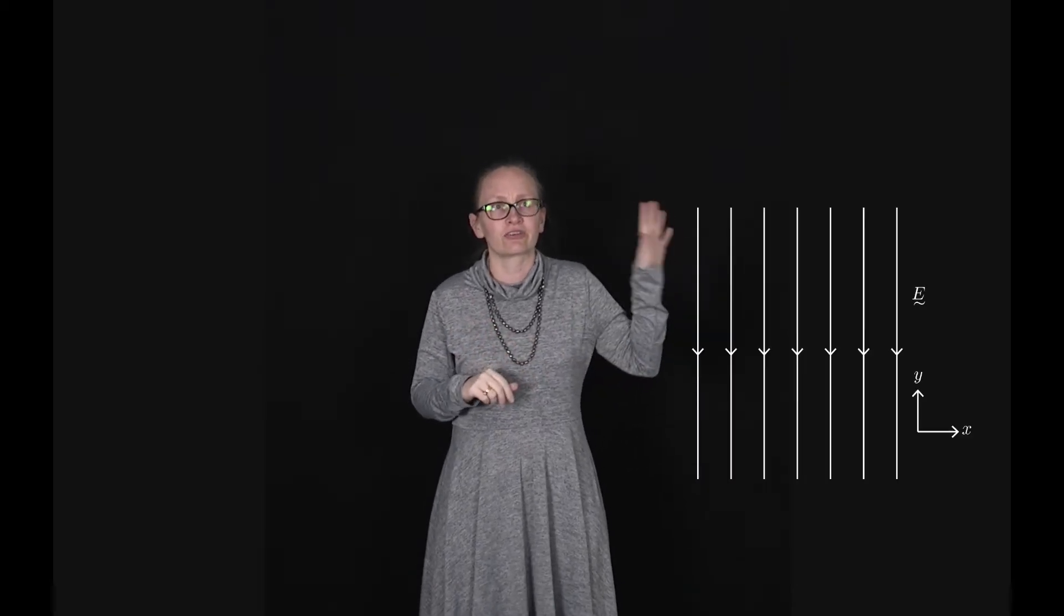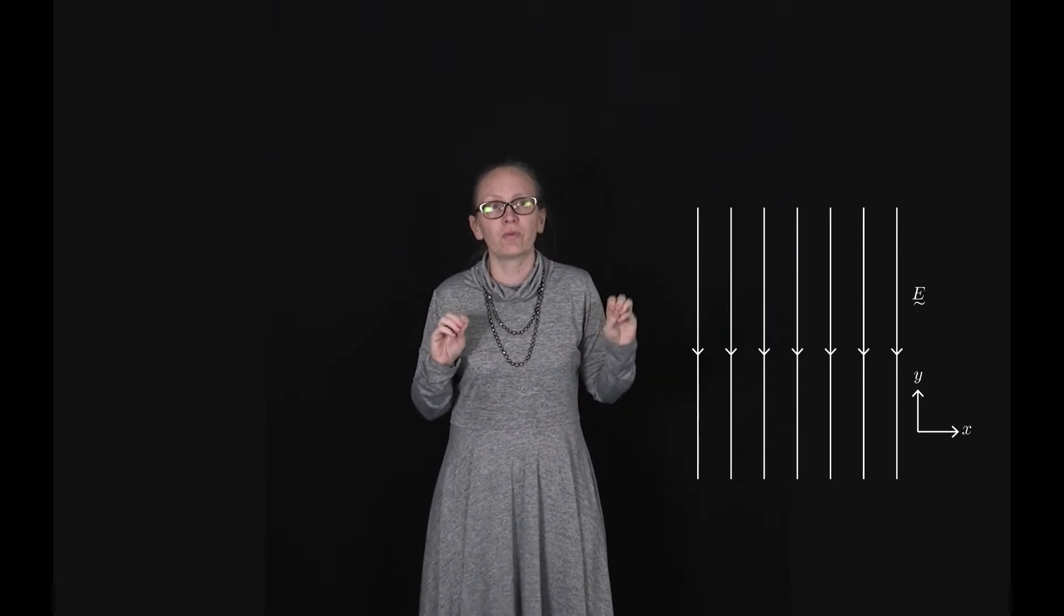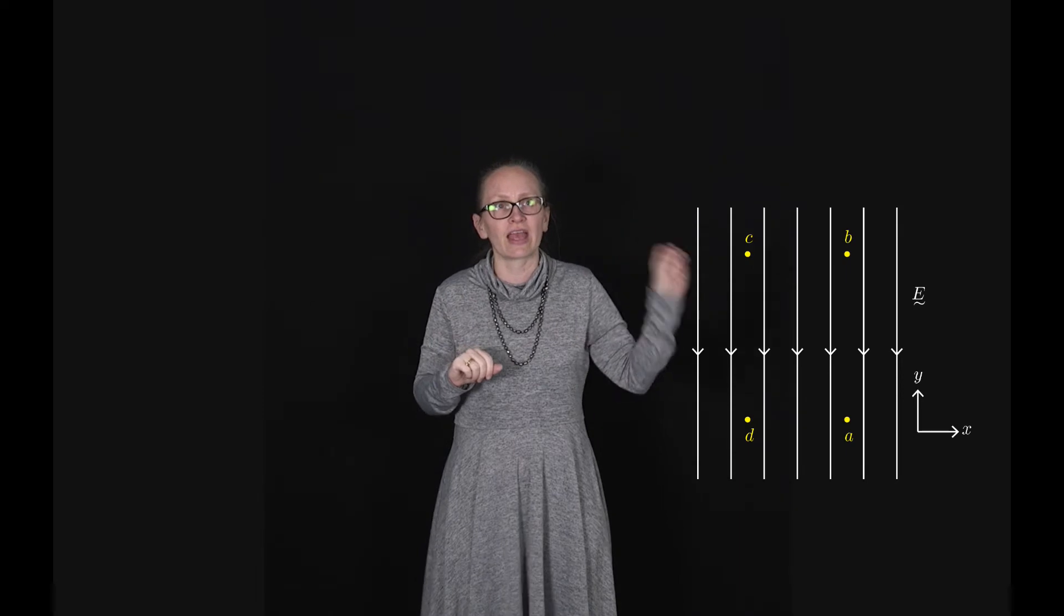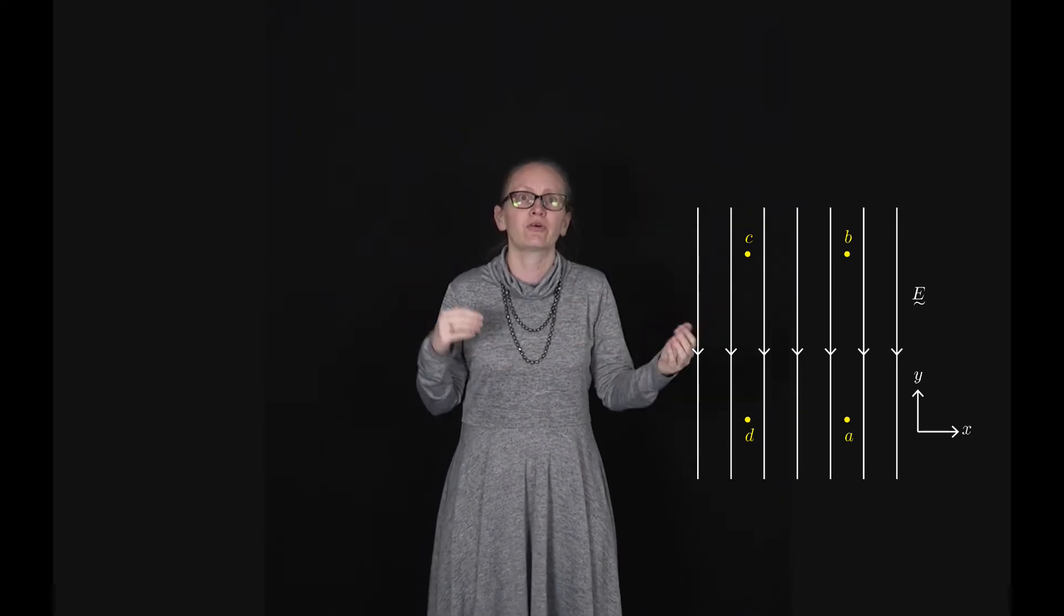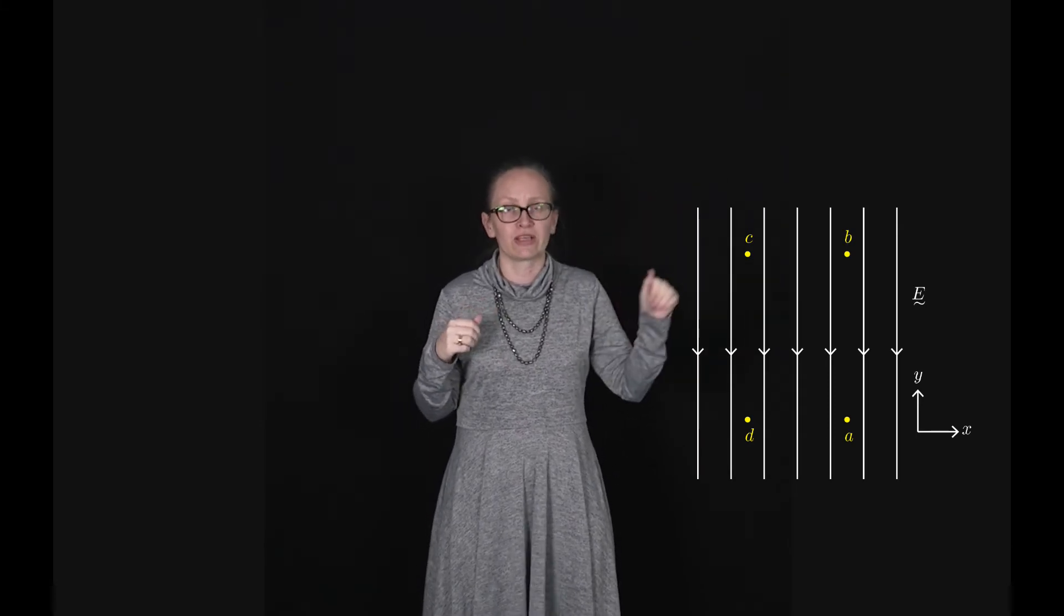So let's start by considering a simple example where we have a constant electric field. So let's consider the constant electric field here going down the page and we'll put four points in our electric field A, B, C and D and we'll calculate how much work the electric field does as it moves from one of these points to the other.